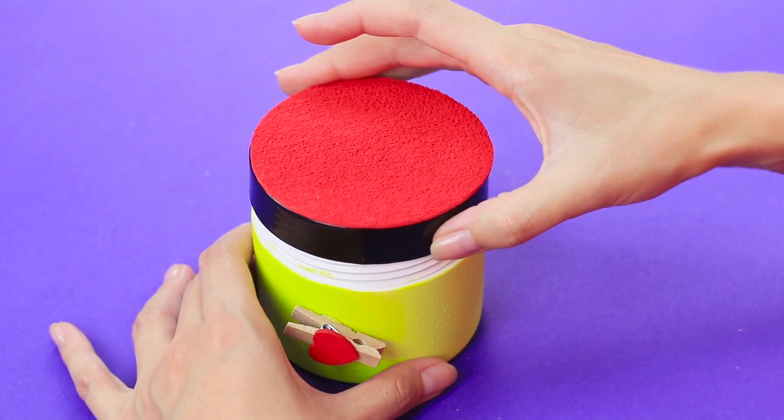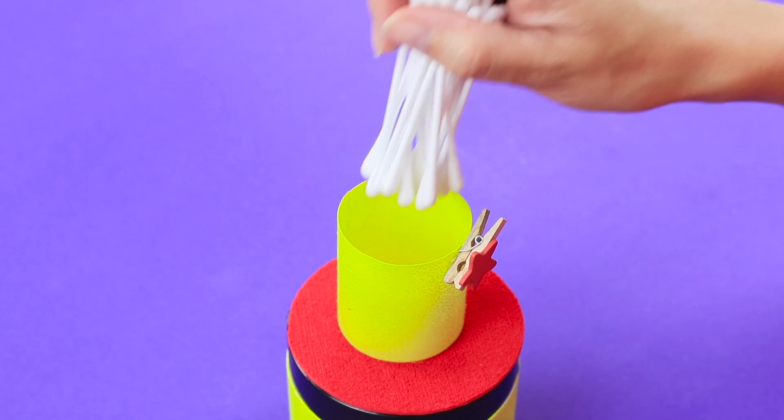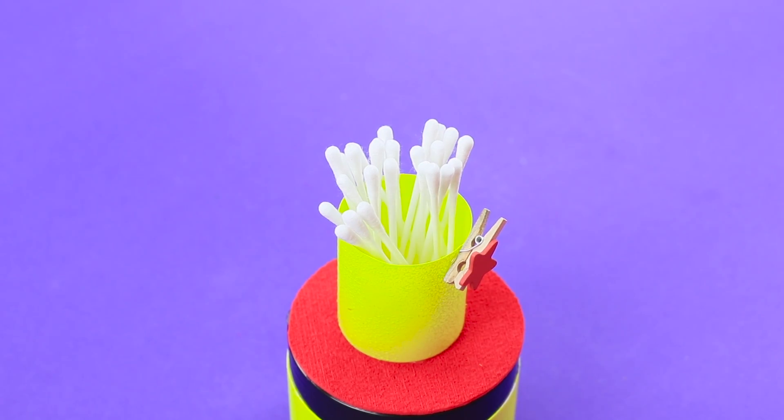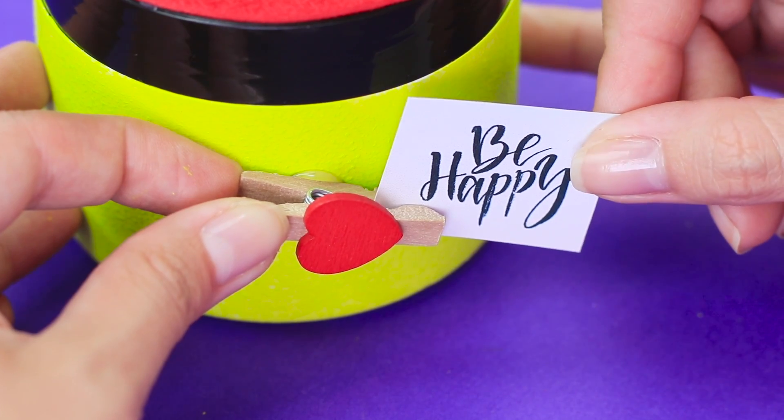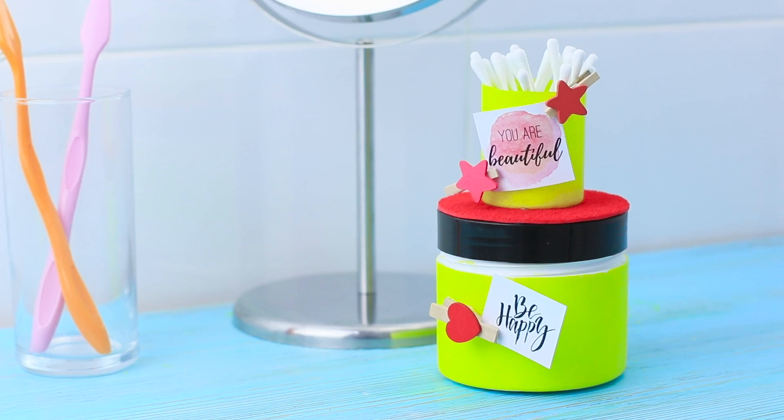Decorate the jars with clothespins. Put cotton pads in the bigger jar. It's convenient, isn't it? Glue the smaller jar to the cap. Wow! Now Q-tips have their own cozy house! Clamp cute notes in the clothespins. It's so cute! And it saves so much space!